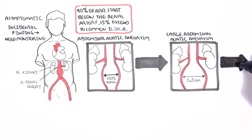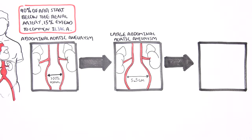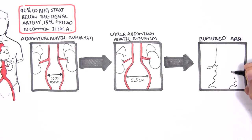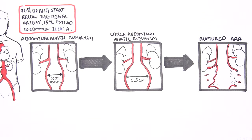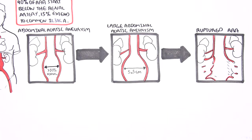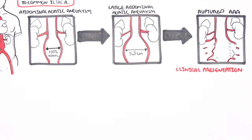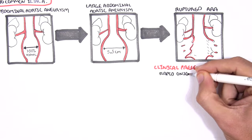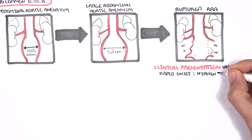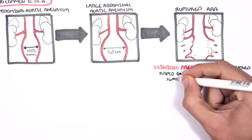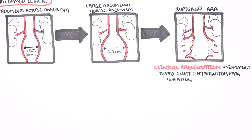If treatment is not done, the AAA can progress to a ruptured abdominal aortic aneurysm. The clinical presentation of a ruptured AAA includes unexplained rapid onset hypotension, back pain or loin pain, and sweating.